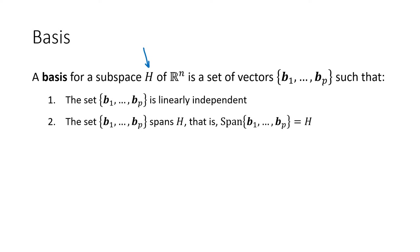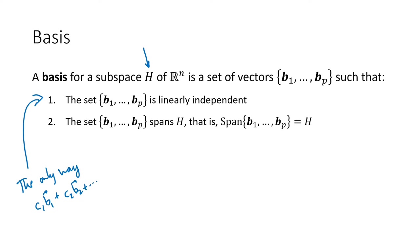The first property is that the set is linearly independent. That means the only way to create a linear combination c1 times b1 plus c2 times b2 plus all the way up through cp times bp that equals the zero vector is if all of those scalars c1, c2, all the way up through cp, are all zero.